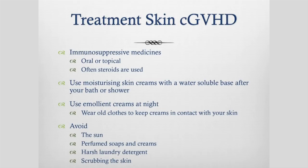If chronic skin GVHD affects your sweat glands, you may not be able to sweat, making hot climates difficult since sweating helps control body temperature. Treatment of chronic skin GVHD involves immune suppression — oral or topical immune-suppressing medicines, often steroids. Use moisturizing creams with a water-soluble base after your bath or shower since skin absorbs them better when slightly damp. Use emollient creams at night, kept close to your skin with old clothes, gloves, socks, or leggings. Avoid the sun, perfumed soaps and creams, harsh laundry detergents, and scrubbing your skin.